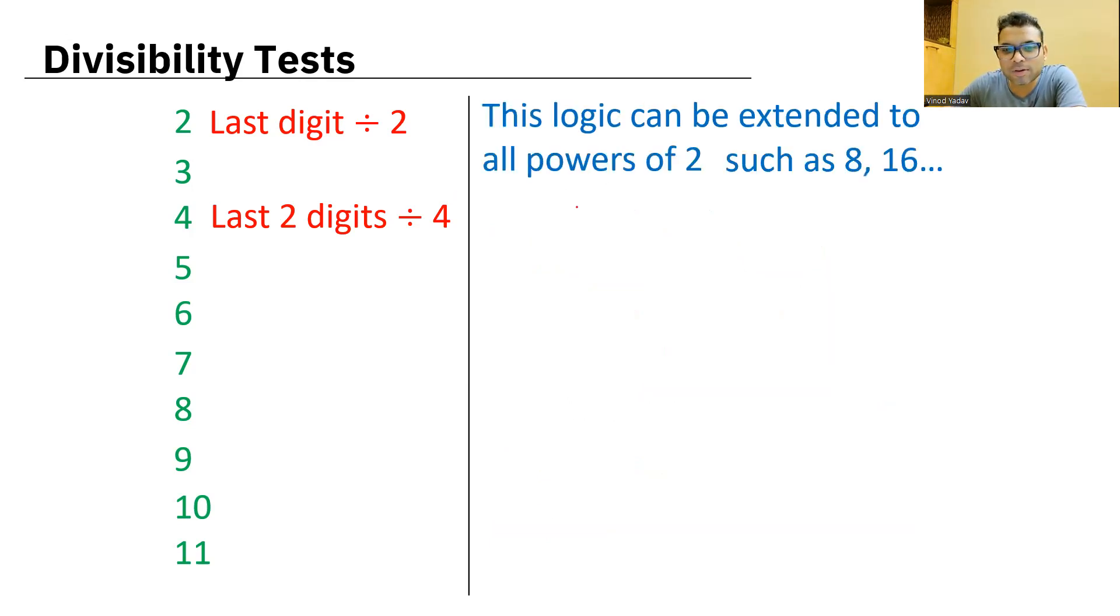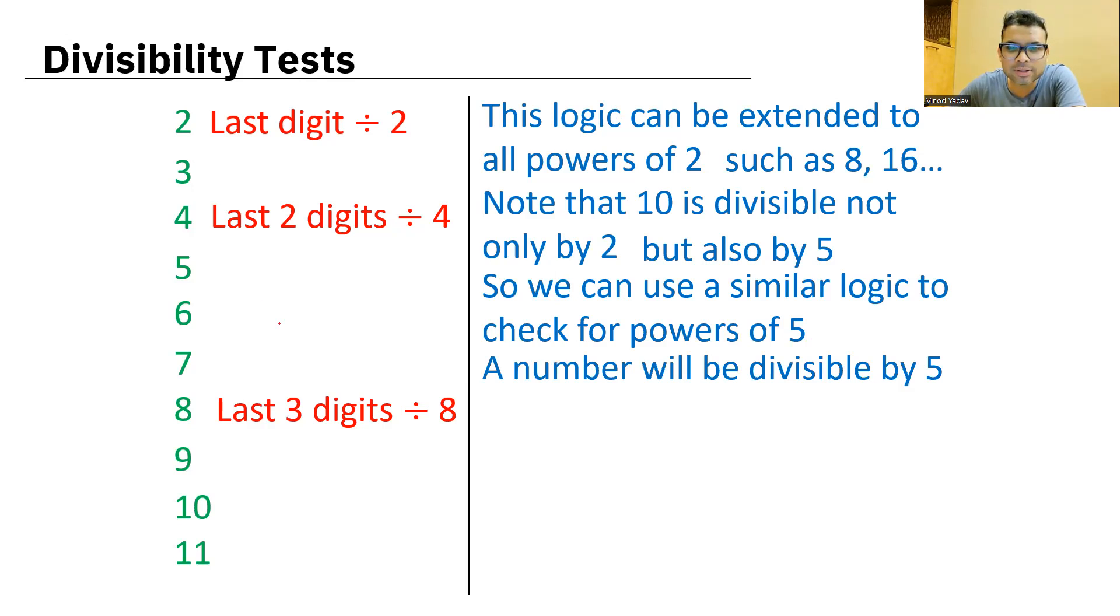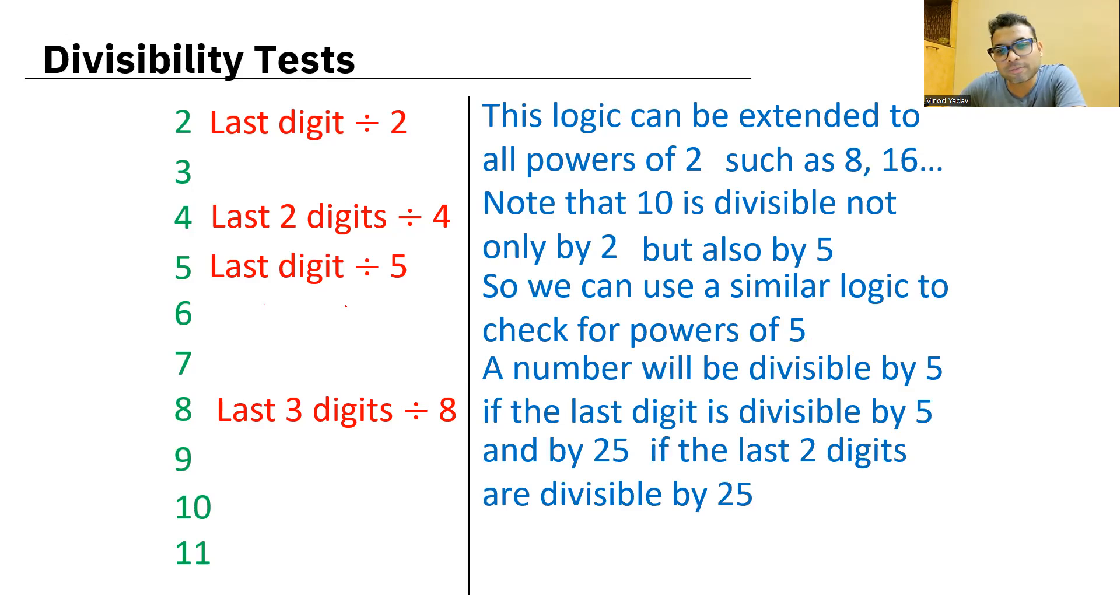Now 10 is divisible only by 2, but not by 3, right? But it is also by 5, just now we saw. So we can use a similar logic to check for powers of 5. So test of 5 means last digit must be divisible by 5, mainly should be zero or 5, right? And if the last two digit number is divisible by 25, it is divisible by 25.